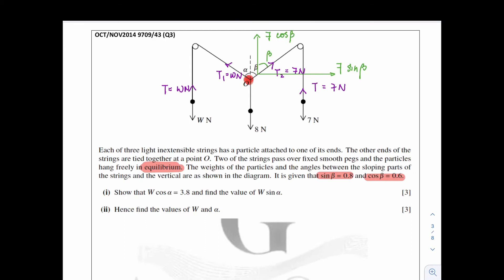Now let's resolve for the w newton, upwards and to the left. The alpha is over here, which means the upward force should be w cos alpha. And the left hand side, it should be w sin alpha. For the 8 newton, we don't need to resolve it into the x and y direction because it's already in the y direction, downwards.